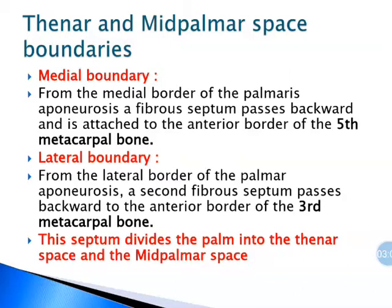Coming to the boundaries of thenar and mid-palmar space. For the medial boundary: from the middle border of the palmar aponeurosis, a septum arises, passes backward, and is attached to the anterior border of the fifth metacarpal bone. For the lateral boundary: from the lateral border of the palmar aponeurosis, a second fibrous septum arises, passes backwards, and gets attached to the anterior border of the third metacarpal bone.